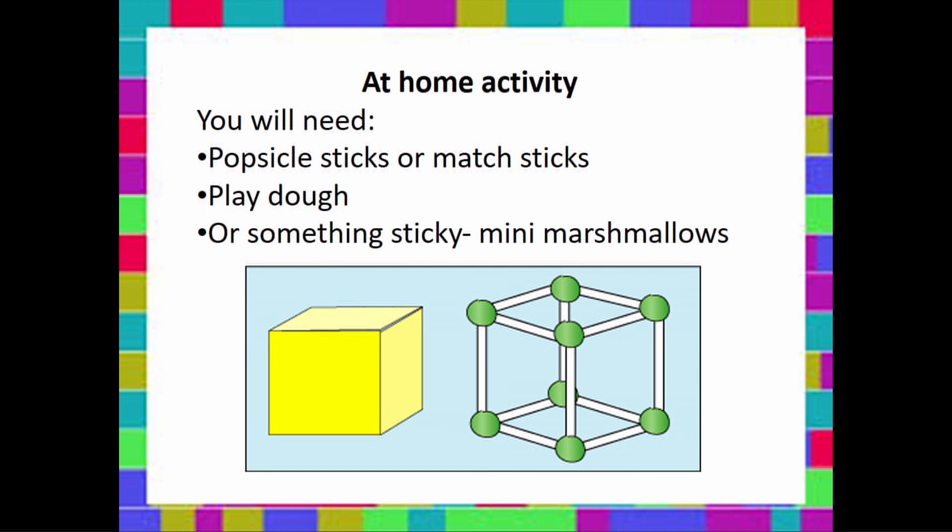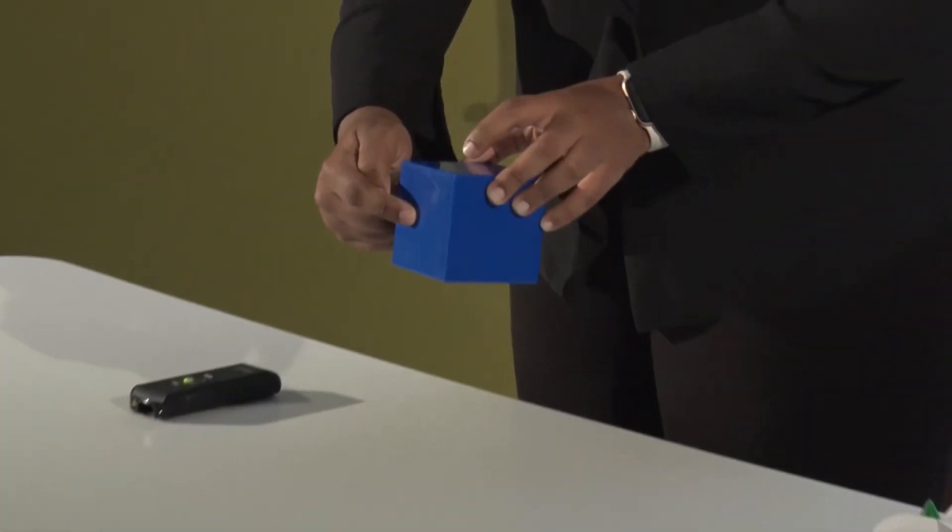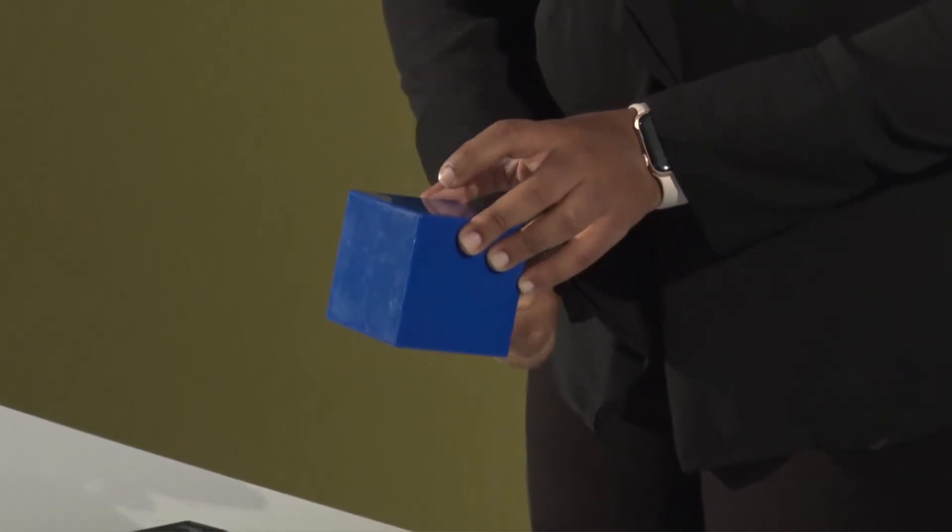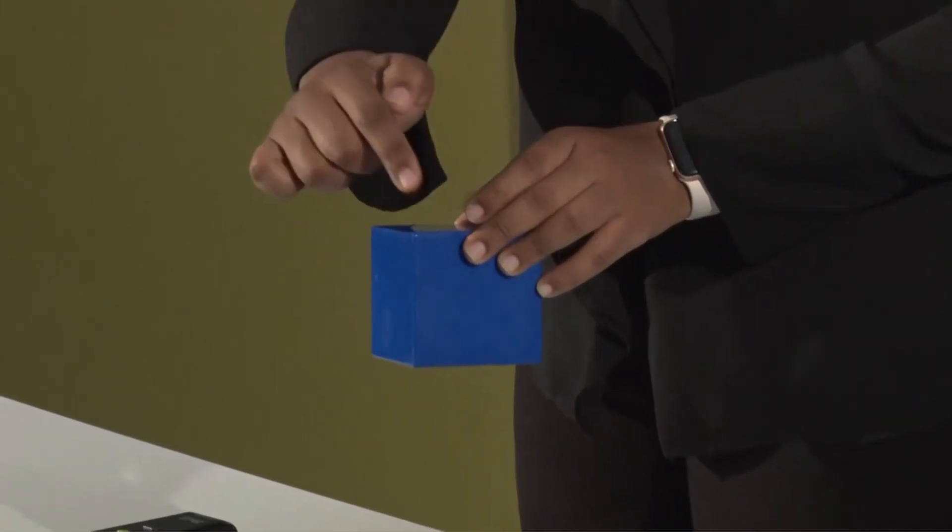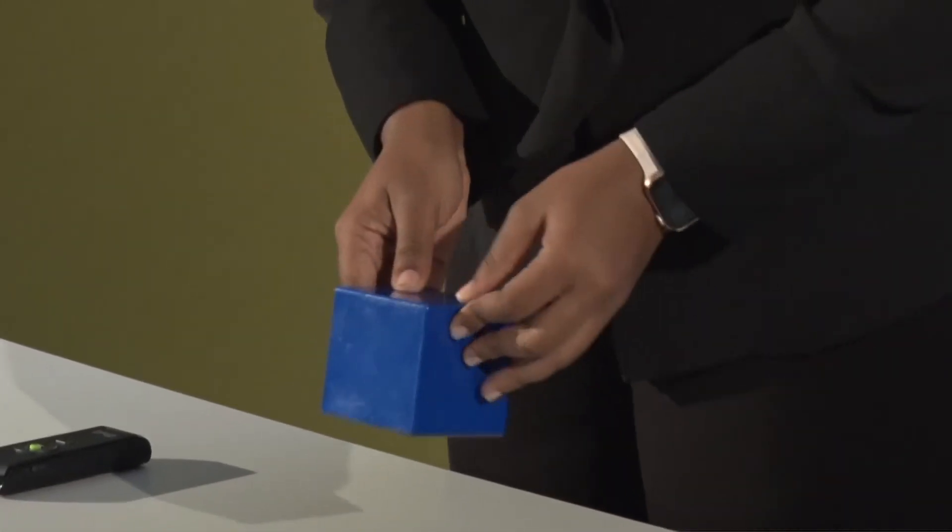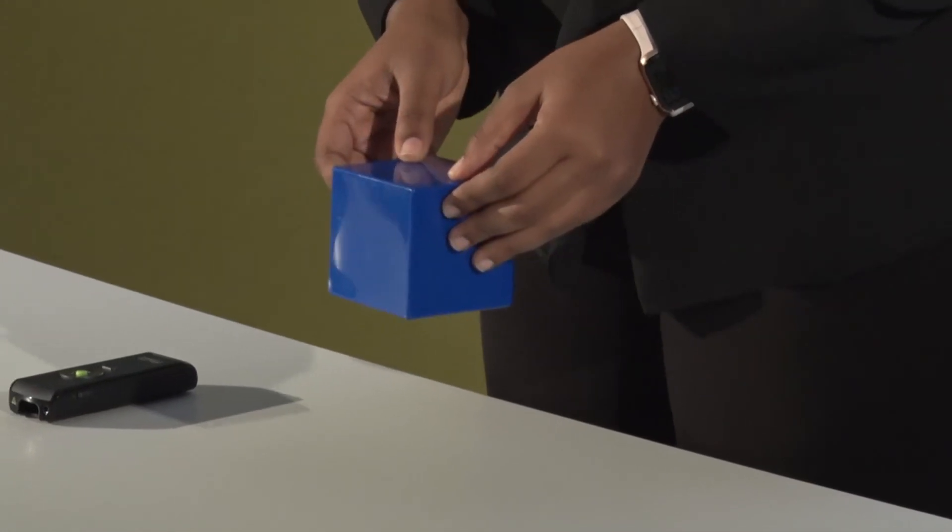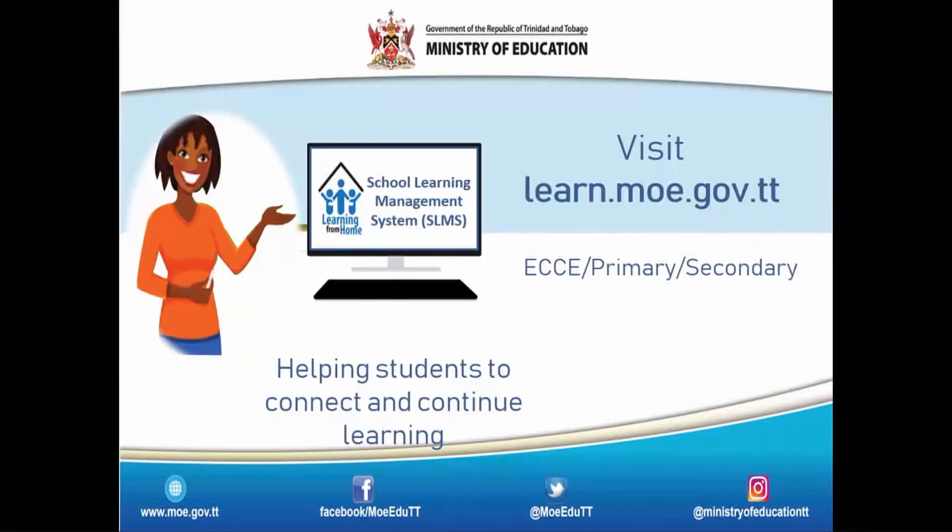So let's look at our cube one more time and you're going to count the number of faces with me. One, two, three, four, five, six. So the cube you make at home must have six faces.